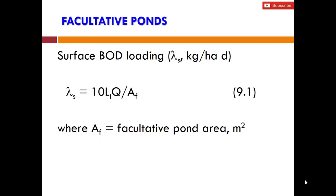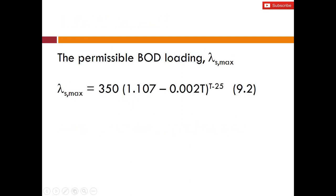Let's start with the design of facultative ponds. First of all, we have to calculate the surface BOD loading, which is how many kilograms of organic matter is applied for each hectare per day, represented as λs. As you can see in this equation, λs equals 10 × Li × Q over A, where Li is the raw BOD of wastewater received by the facultative ponds, Q is the flow, and A is the area of the facultative ponds.